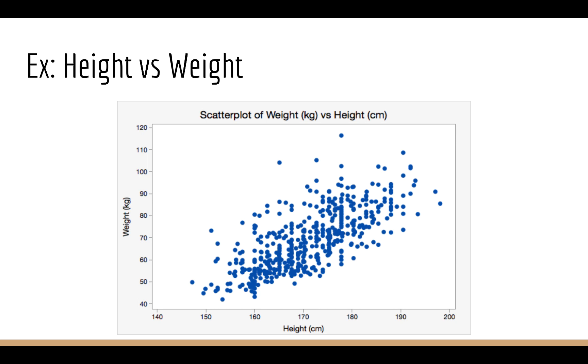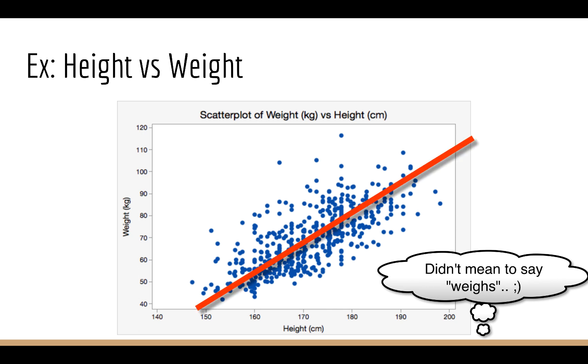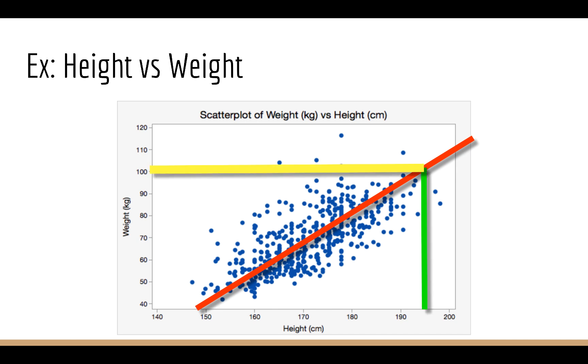So how would a prediction problem work in this case? Well, see here, we have a bunch of dots, but let's suppose we pick a height that nobody has. So, I think around 195. Nobody in this dataset weighs 195. But if I fit a line here, I can connect the height to that line and then look for the corresponding weight. And that would be my prediction.